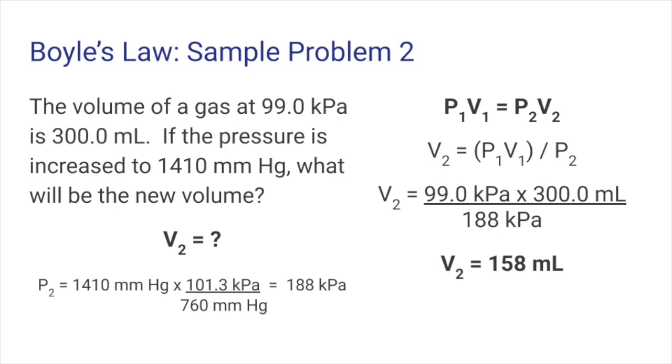Anyway, then I solved the Boyle's law equation for V2, and I got P1 times V1 divided by P2. Substituting 99.0 kilopascals for P1 and 300.0 milliliters for V1, and 188 kilopascals for P2. Finishing the calculation gives us V2 equal to 158 milliliters. Neat!